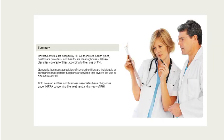Covered entities are defined by HIPAA to include health plans, healthcare providers, and healthcare clearinghouses, and are classified according to their use of PHI. Generally, business associates of covered entities are individuals or companies that perform functions or services involving the use or disclosure of PHI. Both covered entities and business associates have obligations under HIPAA concerning the treatment and privacy of PHI.